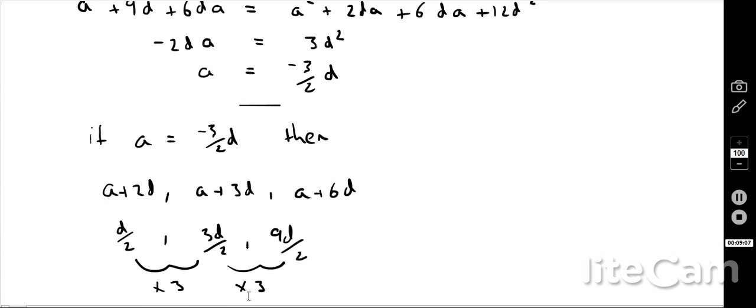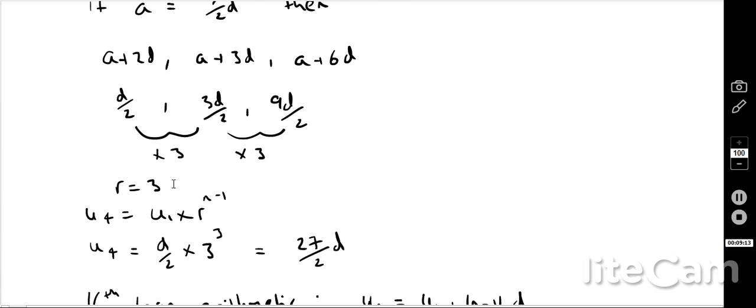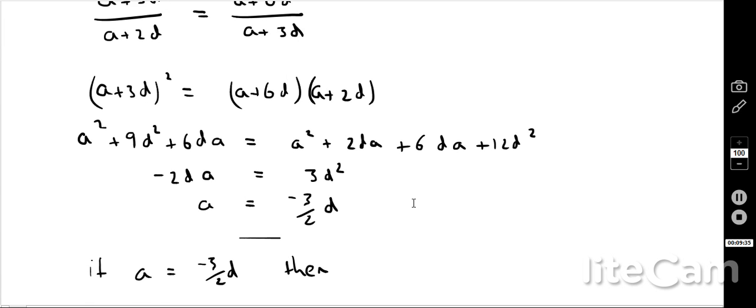And I can see there that I'm multiplying by 3 each time. Therefore, the common difference for my geometric is 3. Therefore, if I want to find the fourth term, well, that's going to be U1 times r to the n minus 1. Therefore, the fourth term is the first term, which is D over 2 times 3 to the power 3, which is equal to 27 over 2 lots of D. And just to scroll back to this question, this is quite an important point.